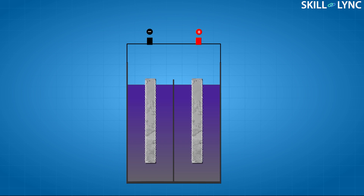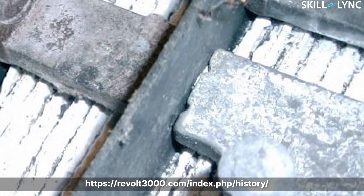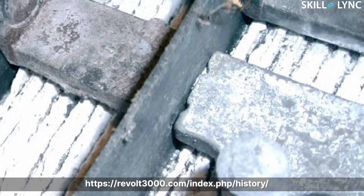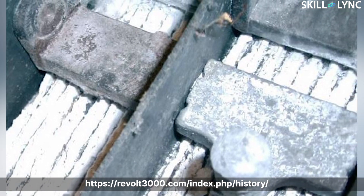The sulfate deposits ultimately expand and crack the plates, thus destroying the cell. Because of this, a major part of the battery pack is unable to supply current, leading to an overall reduction in capacity. The lead sulfate crystals also block the pores of the electrodes and reduce the flow of electrolyte through the electrodes.